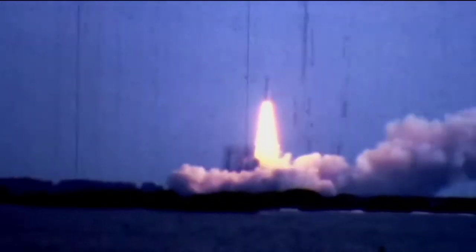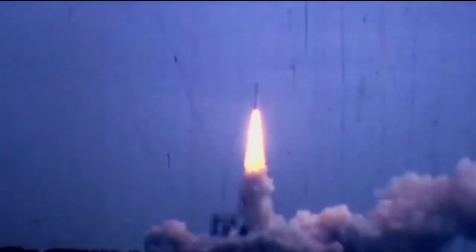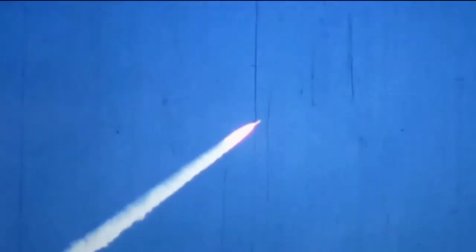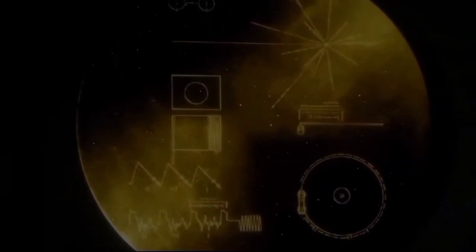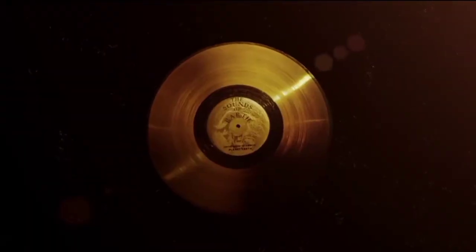August 20, 1977, NASA launched the Voyager 2, and on September 5, 1977, launched the Voyager 1. Both of these spacecraft have something incredible on board, the Golden Records, which contains audio and images from Earth.